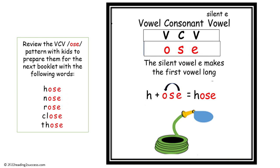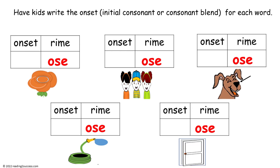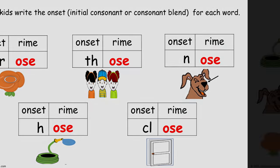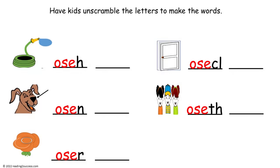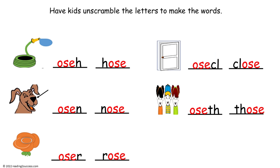The next long O rhyme follows the VCV pattern with the letters OSE. The words kids will be practicing are hose, nose, rose, close, and those. This is the template for the booklet. Have kids write the onset — the initial consonant or consonant blend — for each word. This is the completed example. Now have kids unscramble the letters to make the words. And this is the completed example.